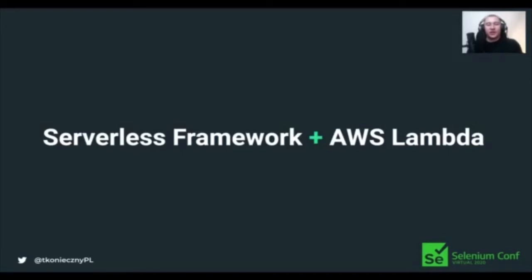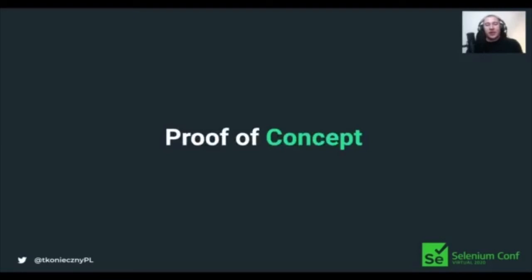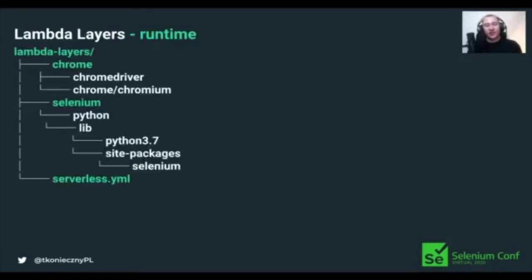I used the Serverless Framework - a great, simple-to-use implementation of the infrastructure-as-code concept - which allows us to describe the whole infrastructure in code in our repository. I used it in combination with AWS Lambda to create execution environments. I'll show you now the proof of concept I implemented. Let's start with the runtime environment and Lambda Layers. We create a Lambda layers directory with two main subdirectories: one named 'Chrome' for the Chrome or Chromium browser and ChromeDriver, and another named 'Selenium' for other Python dependencies. There's also a serverless.yaml file describing the infrastructure.